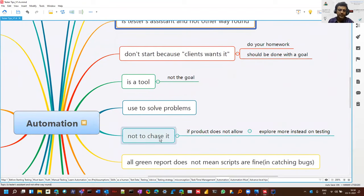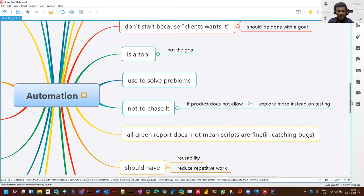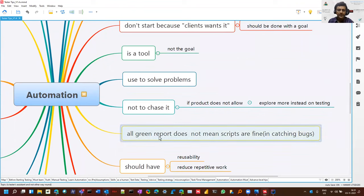It's a tool, it's not the goal. Testing is the goal. Automation is not the goal. It can help you to solve problems and not to chase it. There are some older products where some of the position is difficult to automate or you should search for alternative tools as well. If you can't do it with one tool, you can focus more on testing. It's not that you should leave automation, but not to chase it. There would be times when you see green reports for many days.